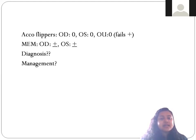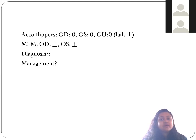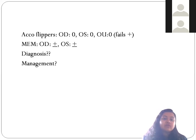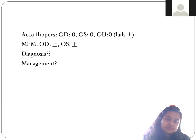MEM value — the dynamic retinoscopy: we got a plain zero (plano). Normally we should get a lag of accommodation of about plus 0.50 to plus 0.75. Instead, we have got a lead of accommodation. Anything less than plus 0.50 is a lead of accommodation; anything greater than plus 0.75 is a higher lag of accommodation.